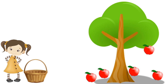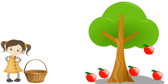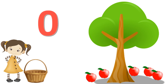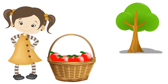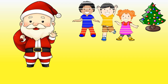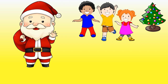Now one more apple falls off from the tree, so we have one apple on the tree. Now this apple also falls off from the tree. Can you see any apple on the tree? There are no apples on the tree — so it is said to be zero. There are zero apples on the tree. This little girl has collected all the apples from the tree.